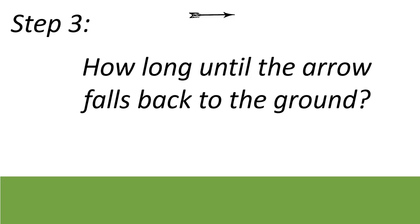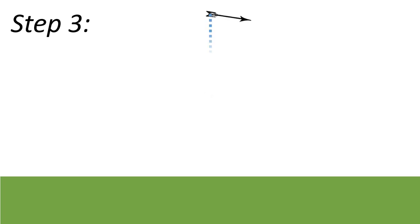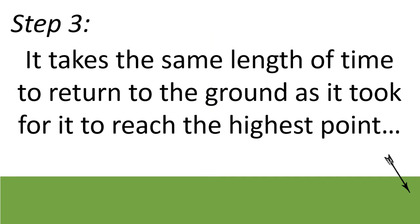Next, we want to think about how long until the arrow falls back down to the ground. It's just the time for it to go from its highest point back down to the ground, and again we just think about this vertical axis. It so happens that it takes the same length of time to return to the ground as it took to reach its highest point. We can prove that with a few of the SUVAT equations, but for now we'll just take that as being correct. So it's 5.62 seconds again.